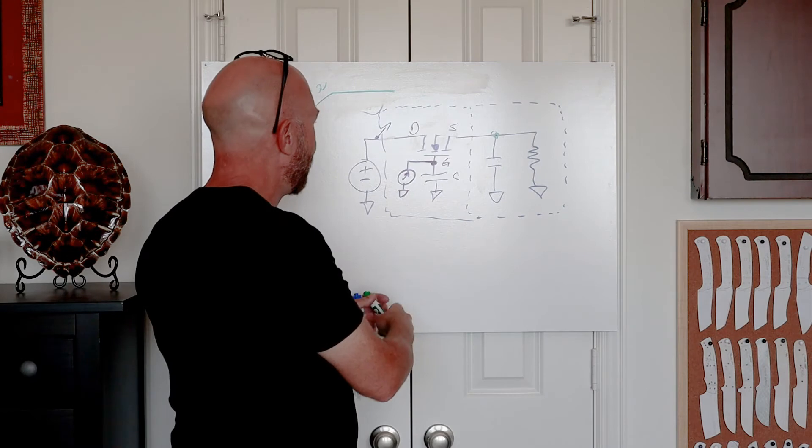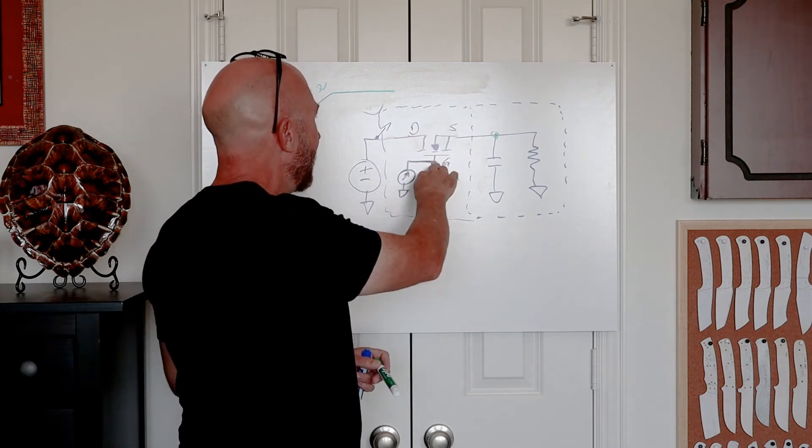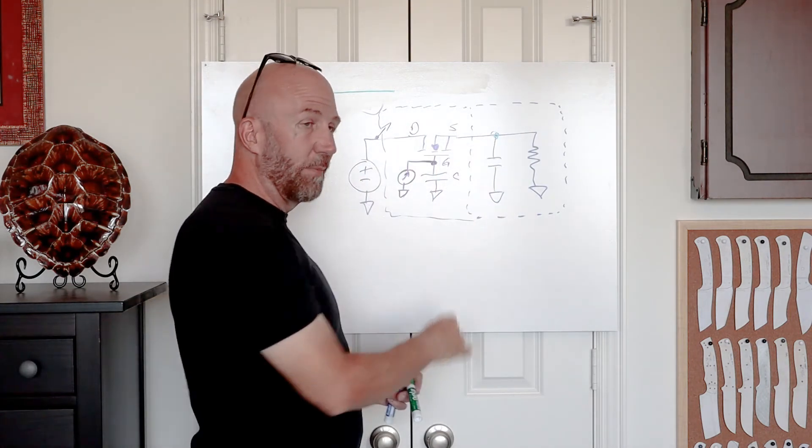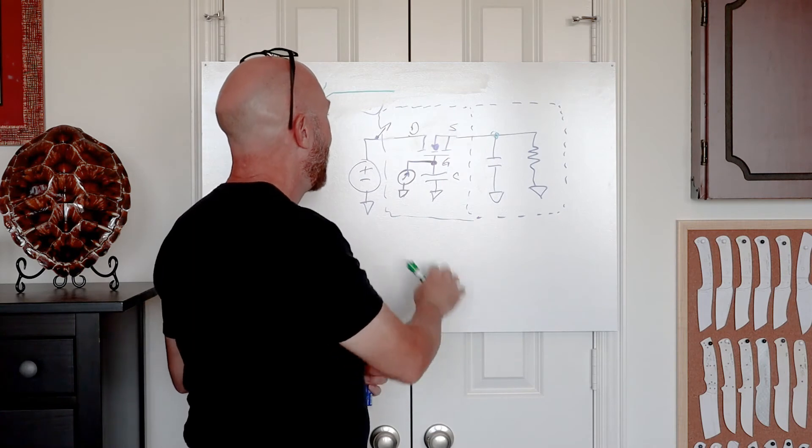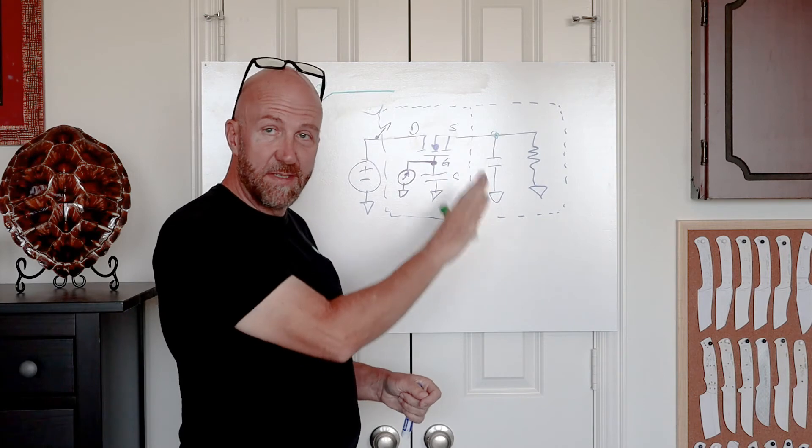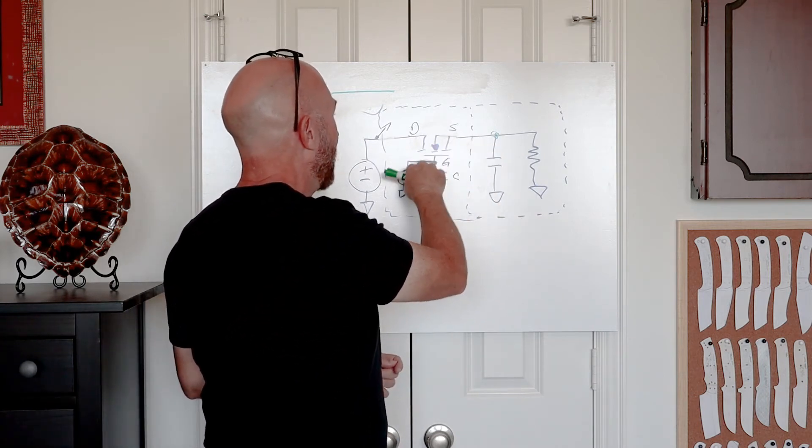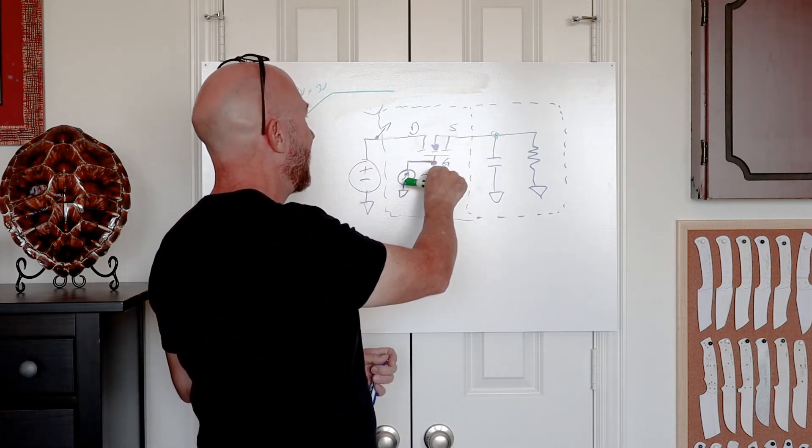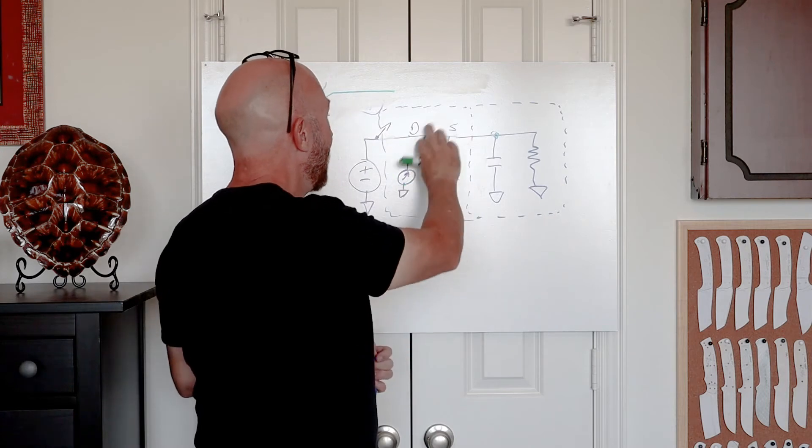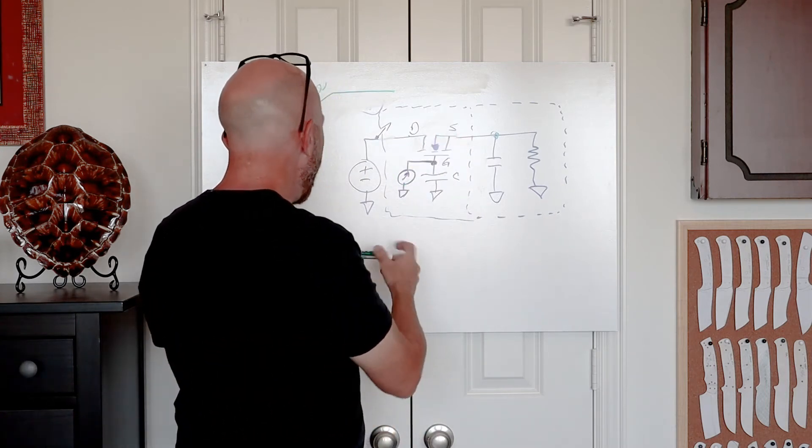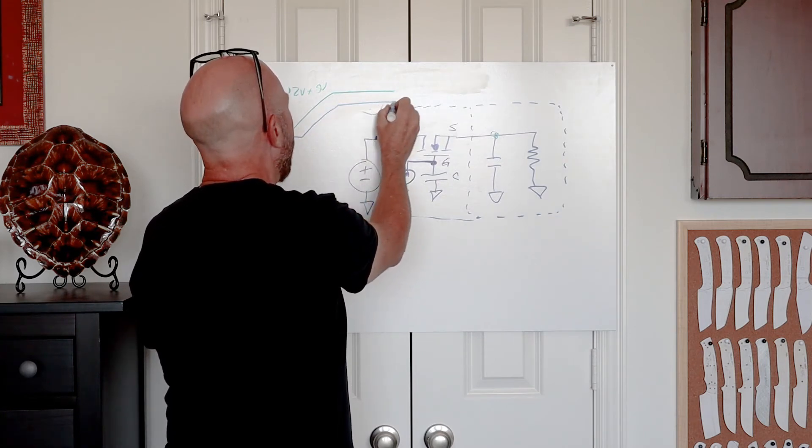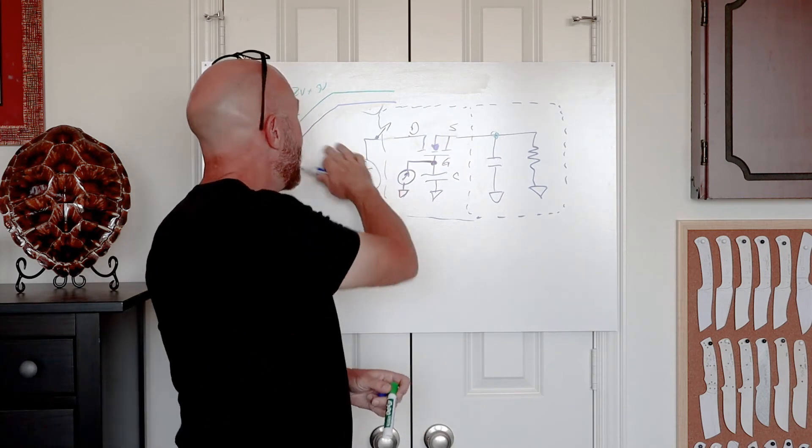The nice thing about MOSFETs is that when we operate them like this, the source follows the gate basically one threshold voltage behind. Whatever the gate is doing, the source is going to follow that minus one VGS_th for the threshold voltage of the FET. At some point the FET turns on and current begins to flow, charging the output cap. If the voltage at the source rises to the gate voltage minus the threshold voltage, the FET starts to shut off again.